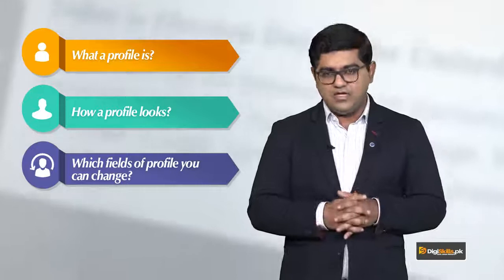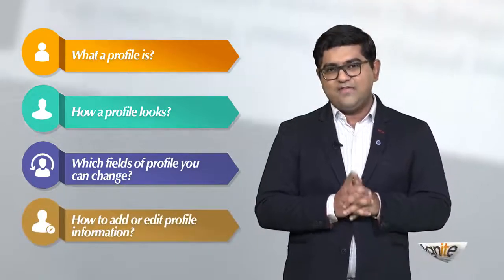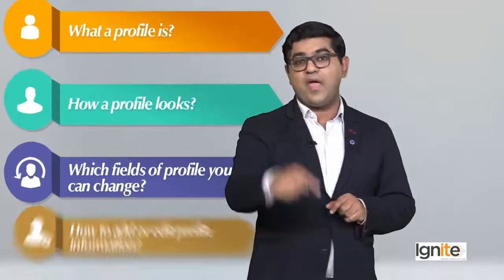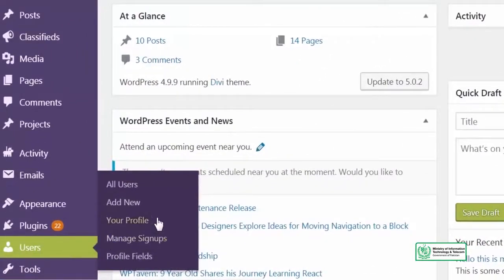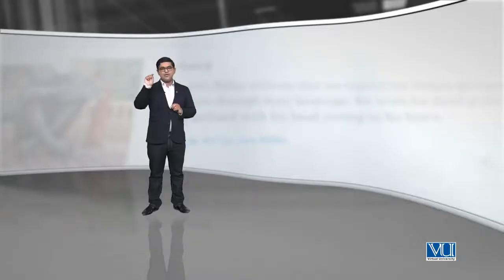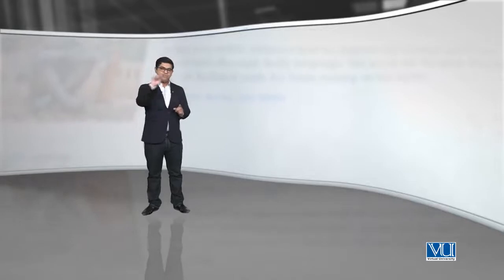In this topic, we are going to discuss what a profile is, how a profile looks, which fields in the profile you can change, and how you can use the WordPress profile feature. You can edit and add profile information. This function is available in your WordPress login backend — on the left-hand sidebar there is a User section, and within that User section there is something called the Profile.